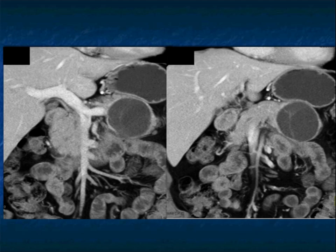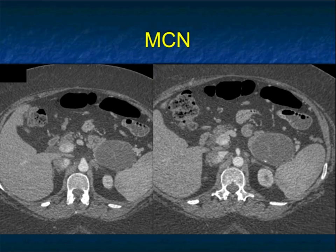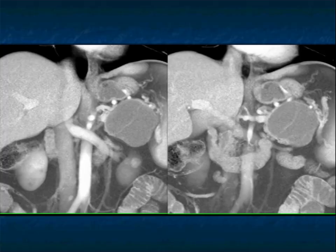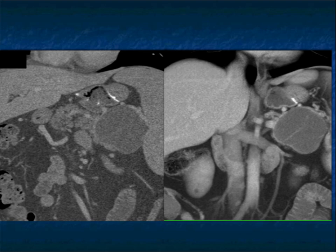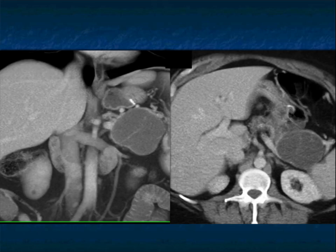We often speak about neuroendocrine tumors with rim enhancement. These MCNs can often have rim enhancement as well, though probably not to the same extent. Another example: lesion by the tail of the pancreas — great location — faint calcification, septations. Septations very nicely shown on the volume rendering. A very nice example of a classic case, female with an MCN.